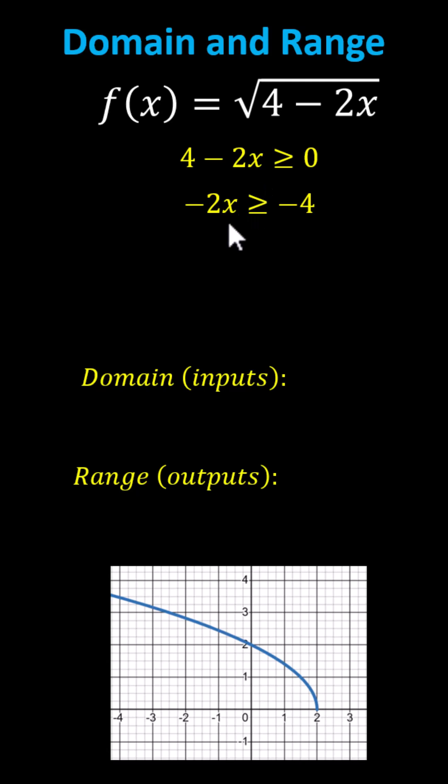We subtract 4 from both sides. Next we divide both sides by negative 2. Remember, when we multiply or divide both sides of an inequality by a negative, we must reverse the inequality. Simplifying, we have x less than or equal to 2.